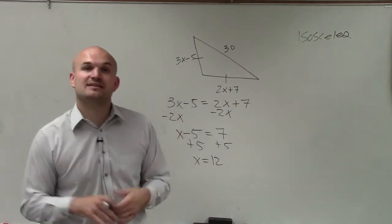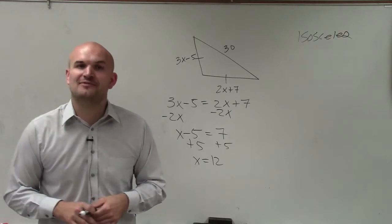So there you go, ladies and gentlemen. That is how you find the missing measure when given an isosceles triangle. Thanks.